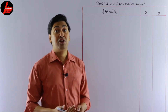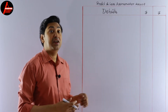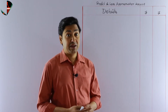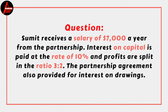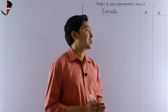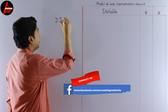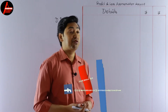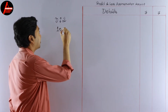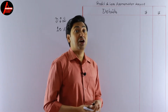Before we start, let us have a look at the question on the screen. Sumit and Dio are the partners of this business. Sumit receives a salary of seven thousand dollars a year from the partnership. Interest on capital is paid at the rate of 10 percent. Profits are split in the ratio 3:2. The partnership agreement also provides for interest on drawings.